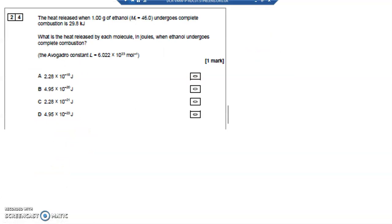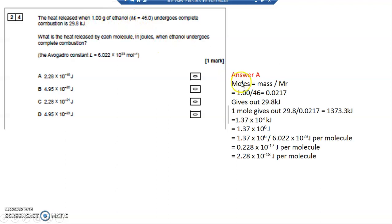Question 24. The heat released when one gram of ethanol, MR 46, undergoes complete combustion is 29.8 kilojoules. What is the heat released by each molecule in joules when ethanol undergoes complete combustion? Well, first of all, let's take it one step at a time. I've got a mass and I've got an MR. So let's work out the number of moles of this ethanol.